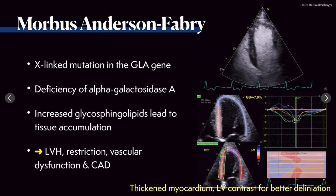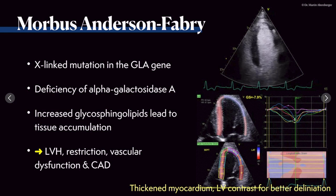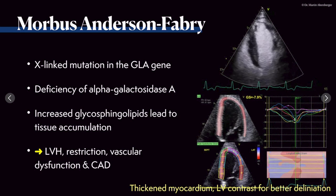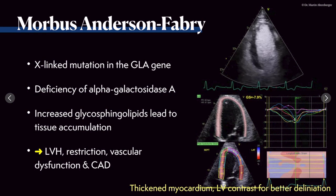Morbus Fabry is caused by an X-linked mutation in the GLA gene that leads to a deficiency of alpha-galactosidase A, causing a consequent accumulation of toxic metabolites. It is a lysosomal storage disorder, and we do have an oral pharmacological chaperone therapy or enzyme stabilizers to help those patients if they have a specific mutation.